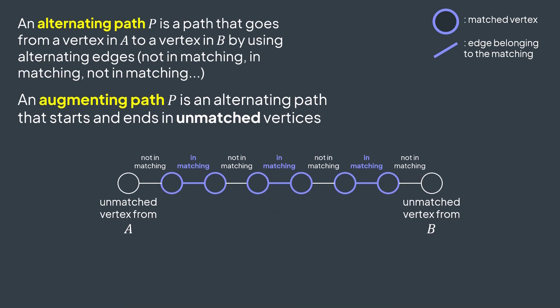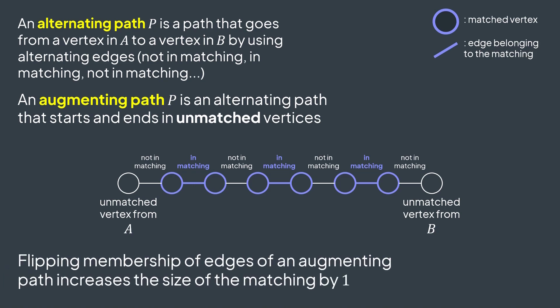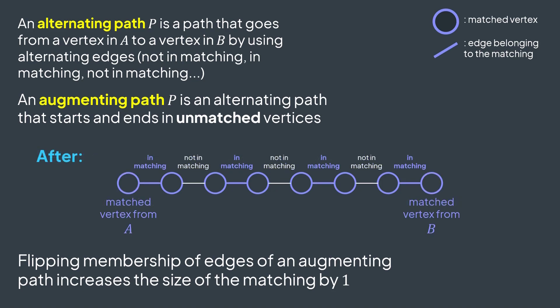An augmenting path is an alternating path that starts from an unmatched vertex of A and ends in an unmatched vertex of B. And flipping membership of its edges — removing ones in the matching and adding ones not in the matching — increases the size of the matching by one. For example, here we have three edges in matching, but after flipping the number becomes four, without breaking the independency constraint. This is why we keep searching for augmenting paths when constructing a maximum matching.